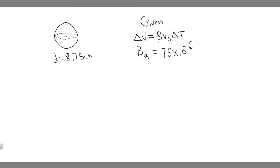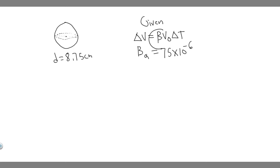In this problem, what we're trying to find is the change in volume. The way we're going to do that is by using this formula for thermal expansion, which is basically: the change in volume is equal to beta times the initial volume times the change in temperature.